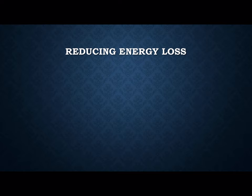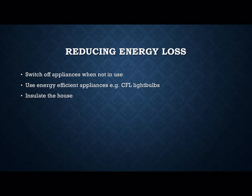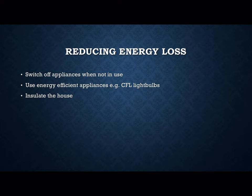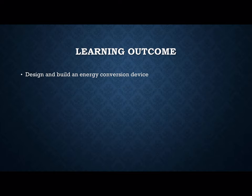It is really important to look into reducing energy loss in the home. There are various ways you can do this: the most simple is to turn off and unplug appliances when they're not being used. Use energy-efficient appliances such as CFL light bulbs and insulate your house. You could also use a timer for heating or water heating. It is also very important not to leave mobile phones plugged in overnight as they may overheat and start a fire. Finally, design and build your own energy conversion device — this can be as simple as a basic catapult.